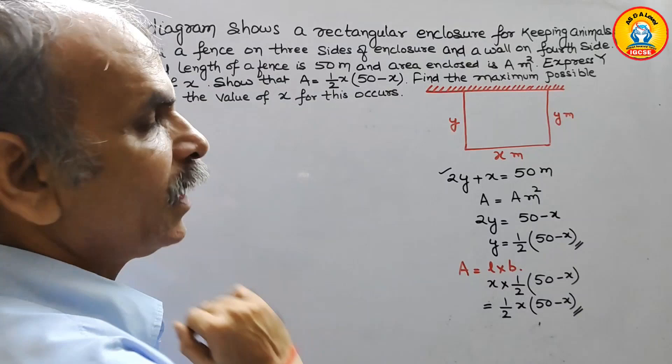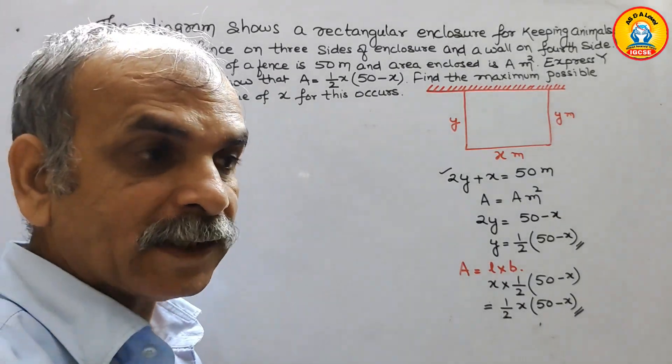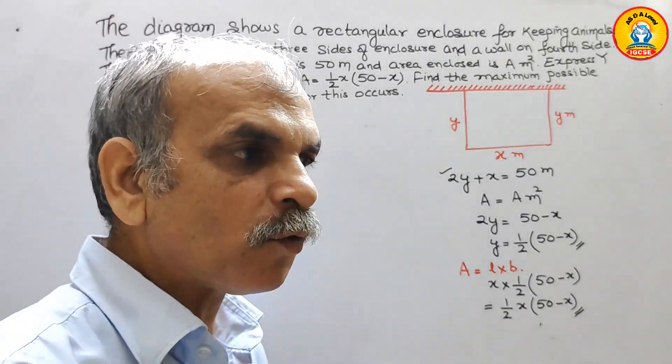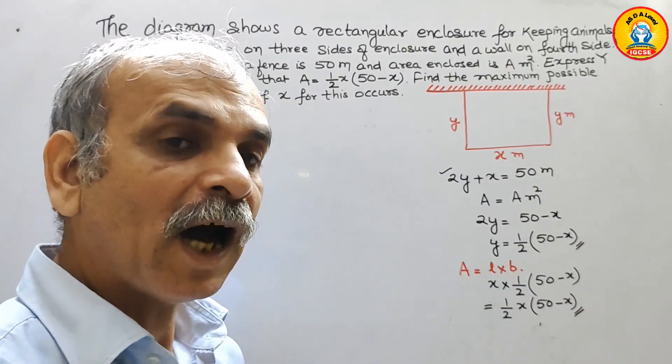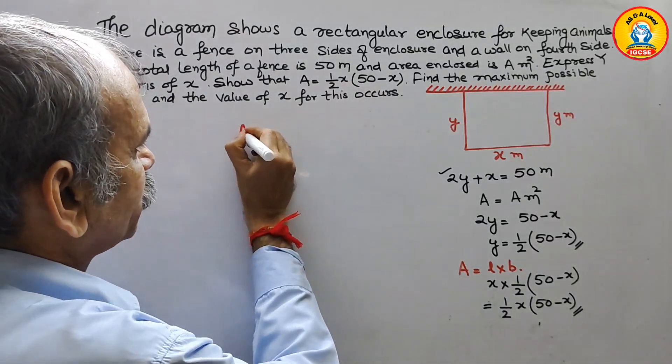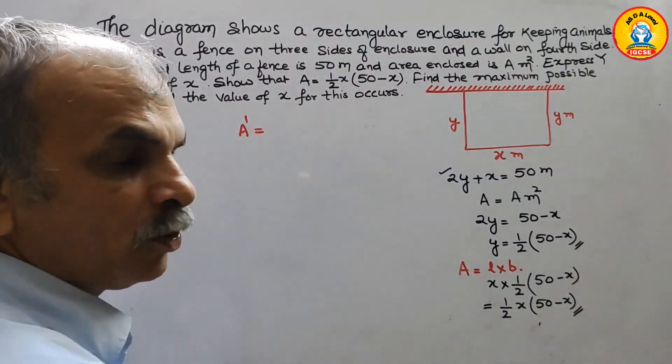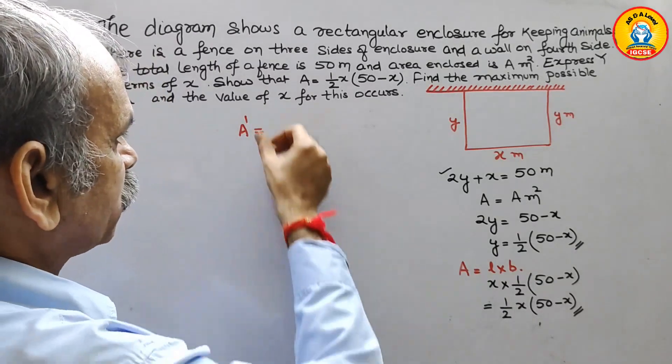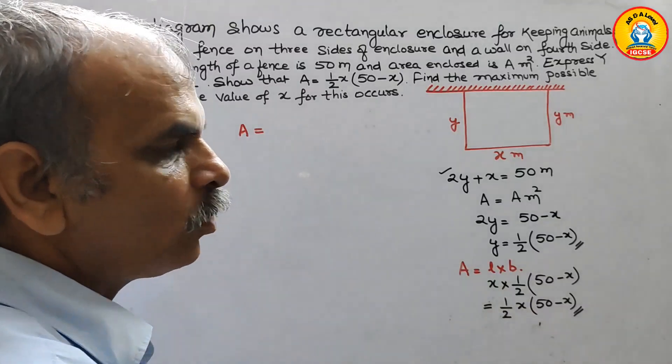Maximum, when it comes we have to go for differentiation. Now we will go for A dash. Sorry, first we will rewrite area. How?